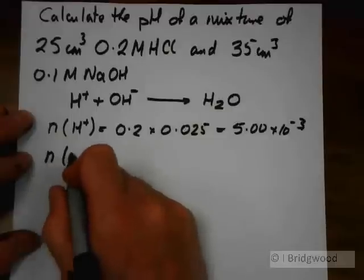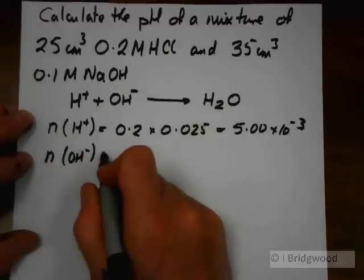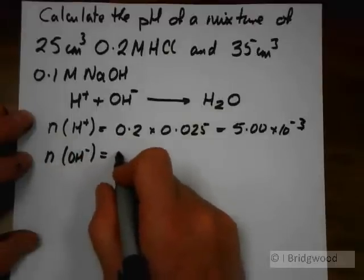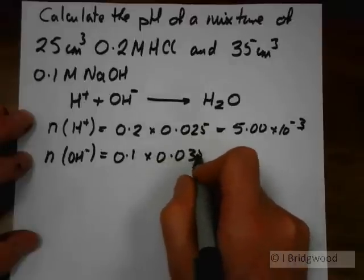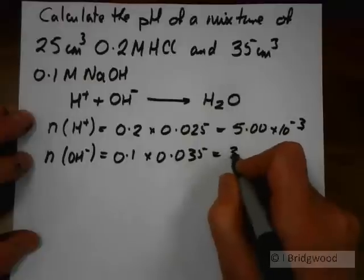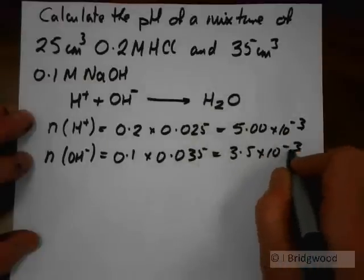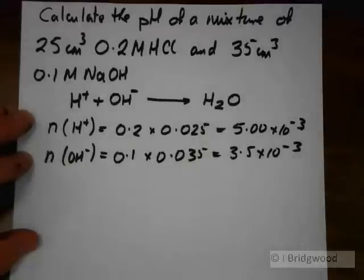Number of moles of hydroxide ions in the same way, 0.1 times 0.035, 3.5 times 10 to the minus 3. We can see that in this case the number of moles of hydrogen ions is in excess of the number of moles of hydroxide ions.